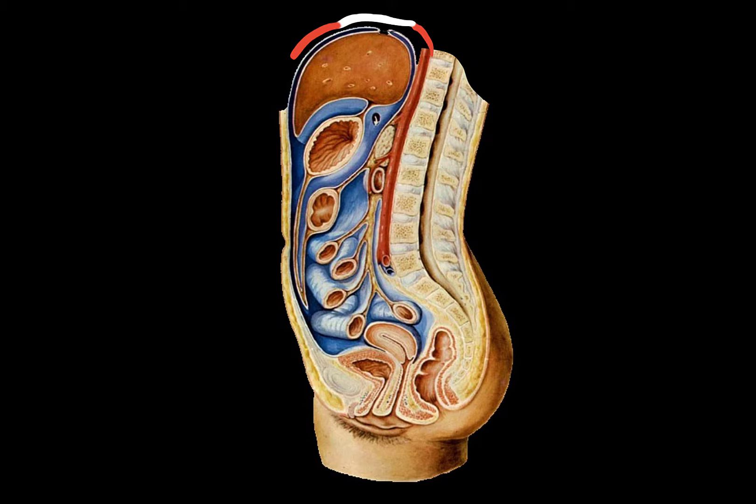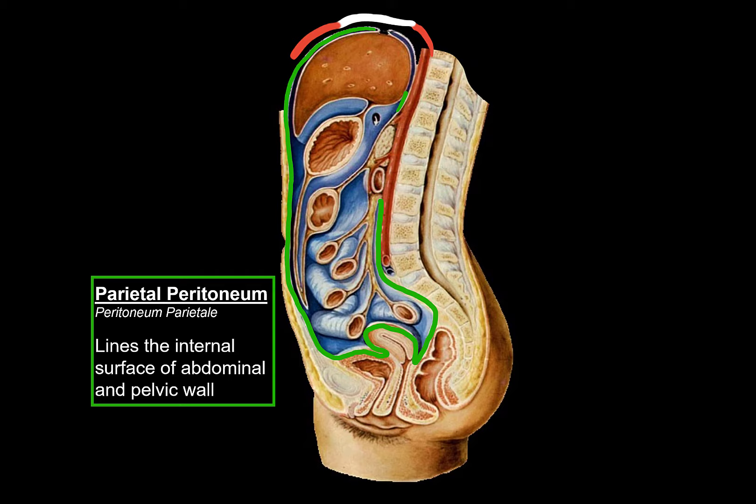The peritoneum consists of only two parts. The first part is the parietal peritoneum, shown here in green. The parietal peritoneum lines the internal surface of the abdominal and pelvic wall. It starts anteriorly at the anterior abdominal wall, wraps around the lateral abdominal wall, and then connects at the posterior abdominal wall.